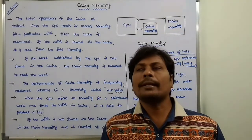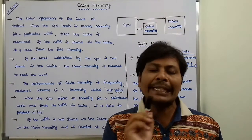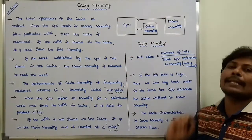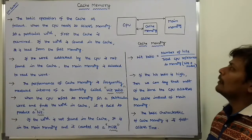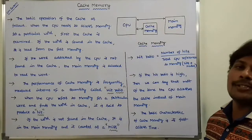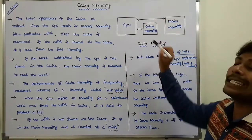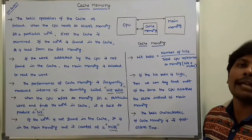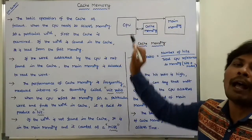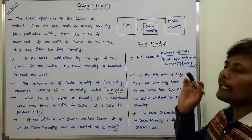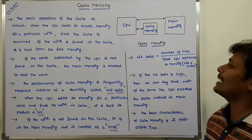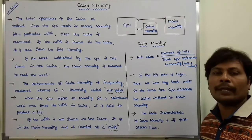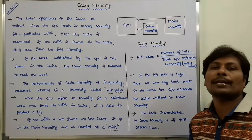The basic operation of cache memory can be described as follows. Suppose the CPU wants to access the memory for a particular word. First, it checks the cache memory to see if the word is present or not. If the word is present in the cache, then it can be read from the cache memory. If the word requested by the CPU is not found in the cache, it can be read from the main memory. This is the basic operation of cache memory.